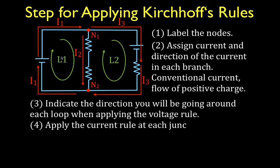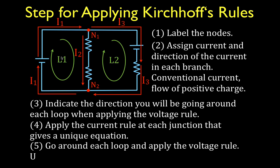Step 4 is we're going to apply the current rule, and step 5 is we're going to apply the voltage rule and use V equals I times R at each of the resistors. Steps 1 through 3 are really the things you do before you apply the rules, and then you apply each of the rules. On the next slides, I'm going to go through particular things you need to keep in mind when you apply the current rule and the voltage rule.